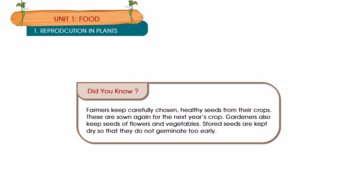Did you know? Farmers keep carefully chosen healthy seeds from their crops. These are sown again for the next year's crop. Gardeners also keep seeds of flowers and vegetables. Stored seeds are kept dry so that they do not germinate too early.